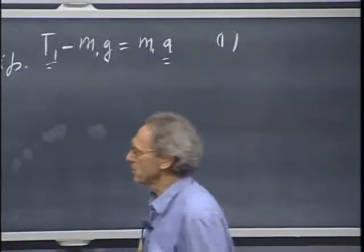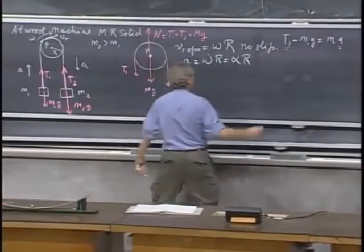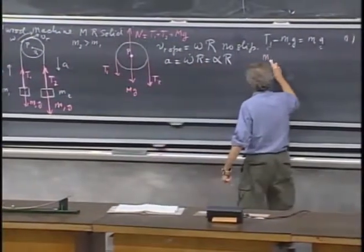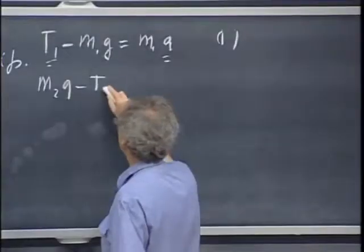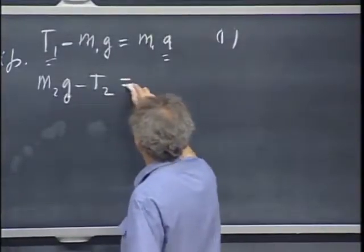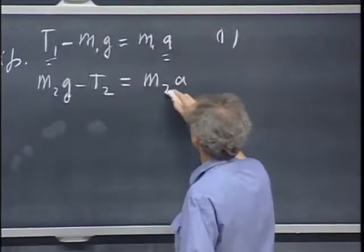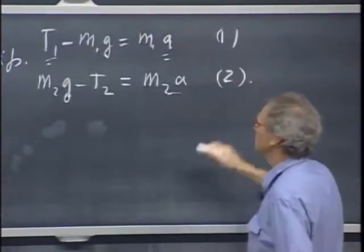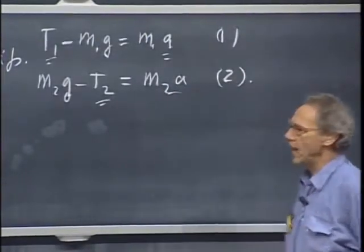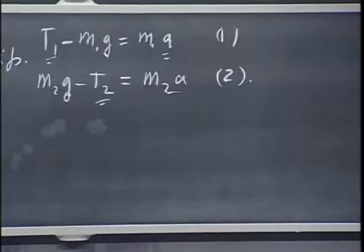Second equation for this one. I call this the positive direction. m2 g minus T2 equals m2 a. Second equation. One unknown has been added, so I need more. Of course I need more. I also have to think about the pulley.